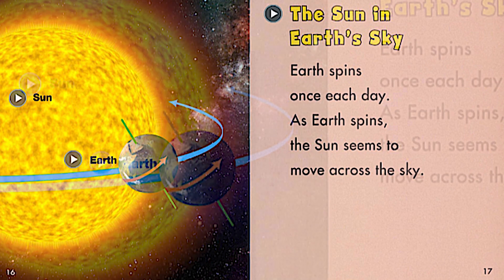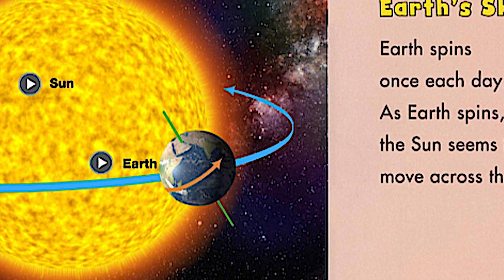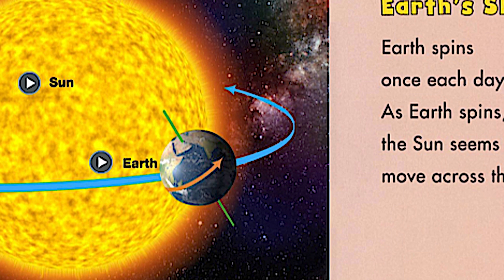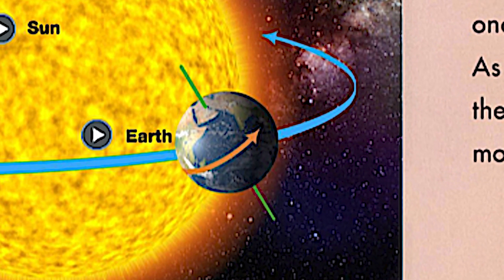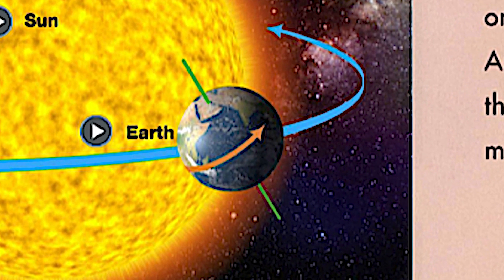Take a look at the picture. Can you point to the yellow star? And what do we call that yellow star? That's right, we call it the sun. Now point to Earth, and take a look at the arrows that are going around Earth. That arrow is showing us that it is spinning, and it spins all day long.